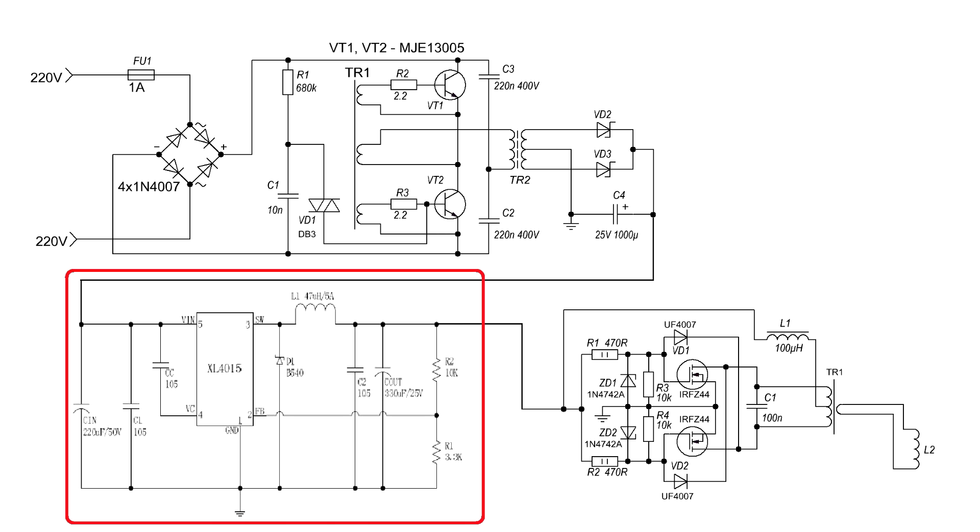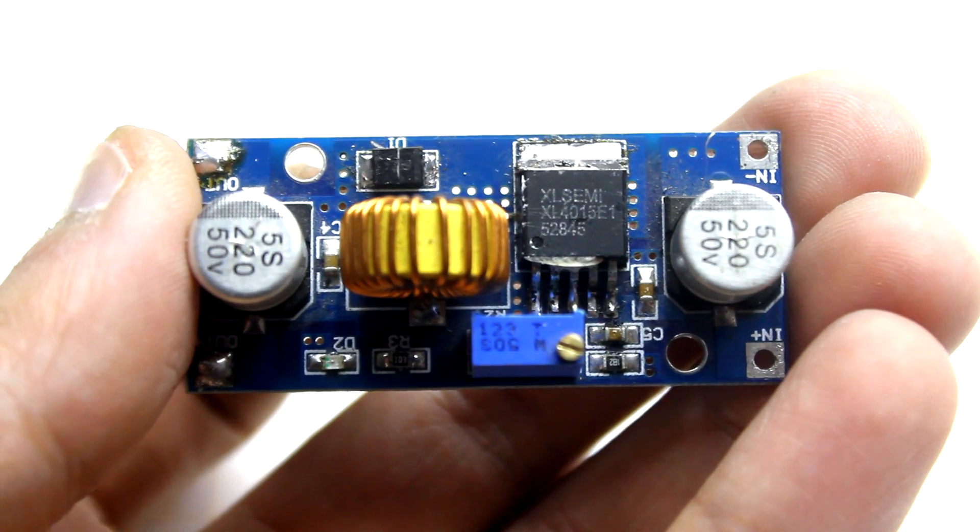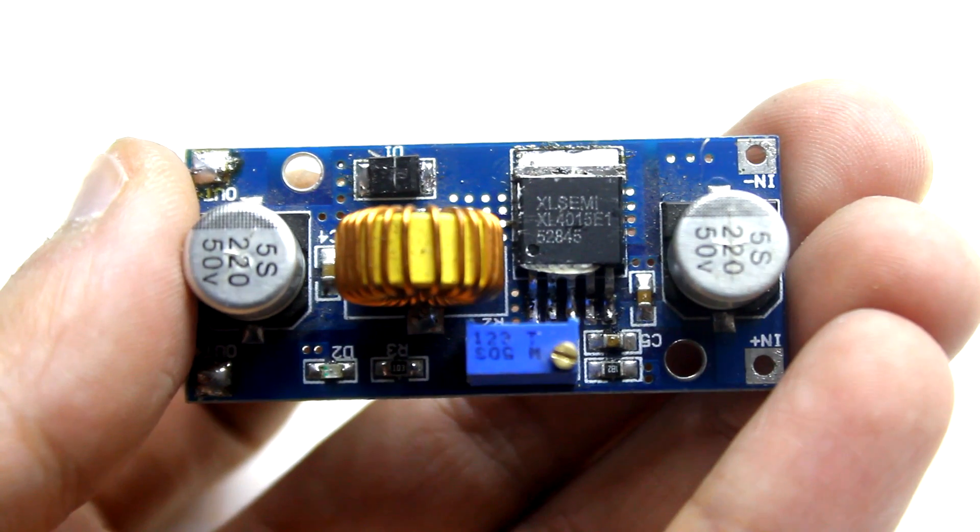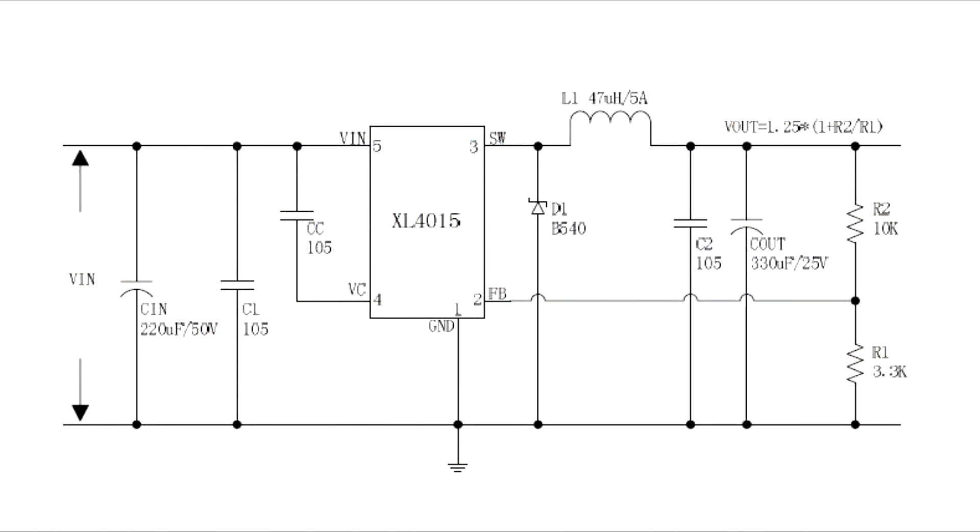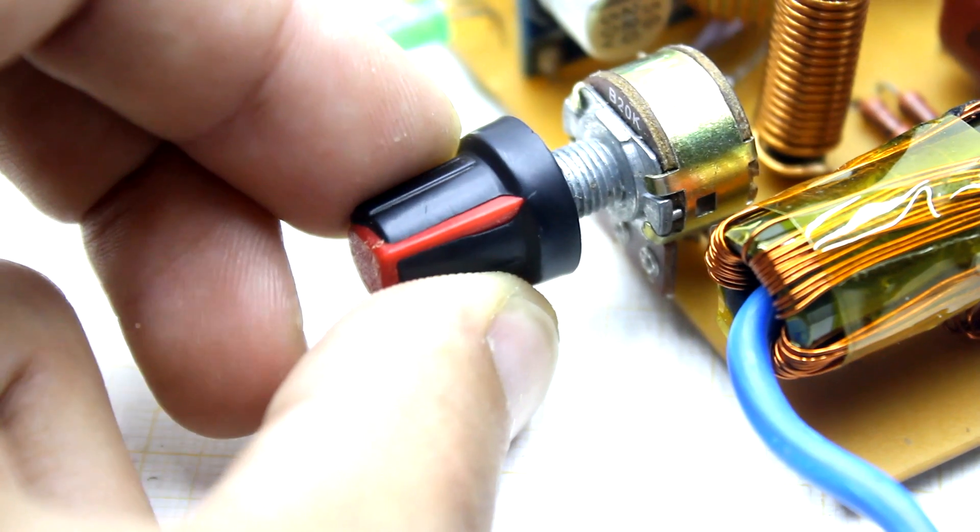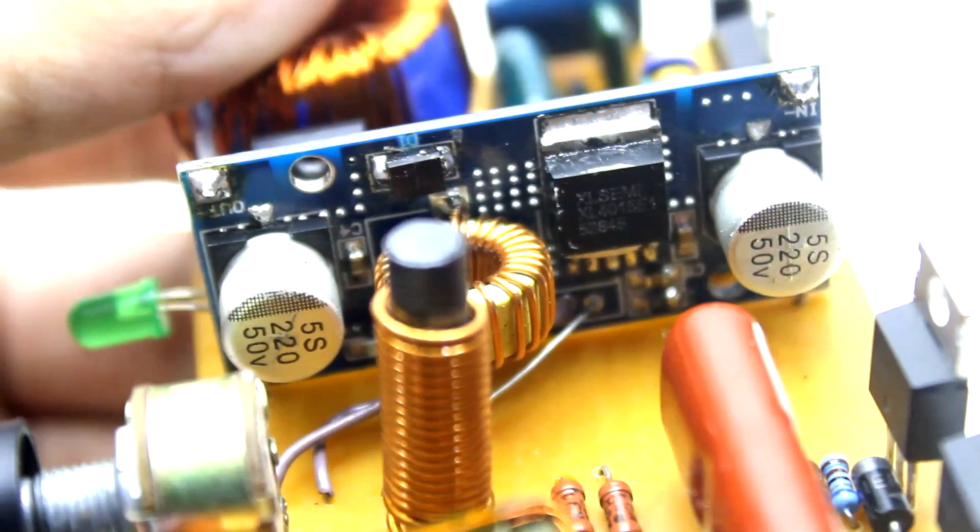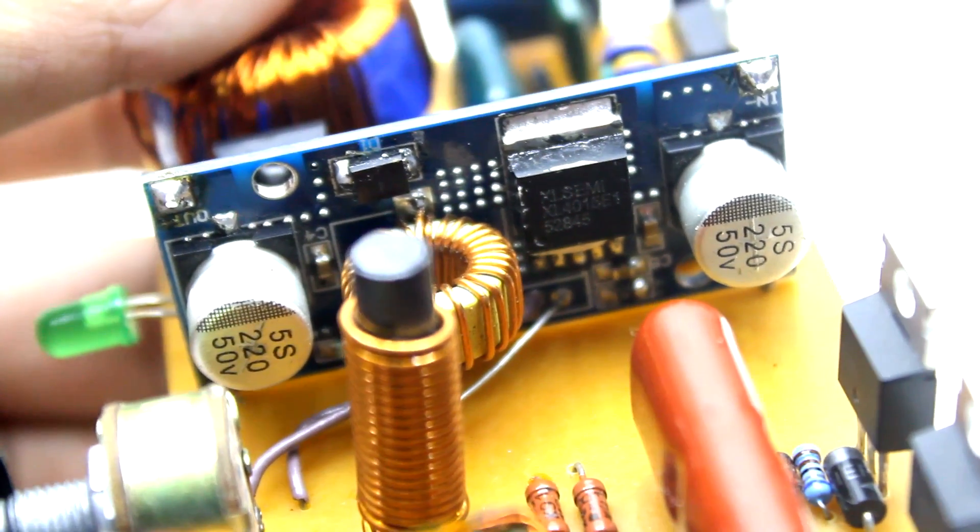Next is the impulse stabilizer. I decided to put a ready module based on the XL4015 stabilizer. The stabilizer module will allow you to change the supply voltage of the generator. This way, we change the power and hence the temperature of the tip.